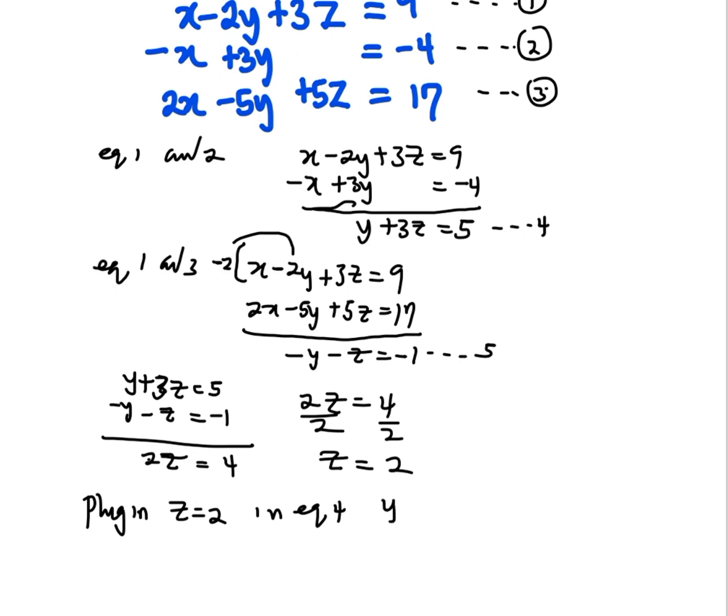In equation 4, I'm going to have y plus 3z, which is 3 into 2, equals 5. y is going to be 5 minus 6, which is negative 1. So, I've gotten the second unknown.